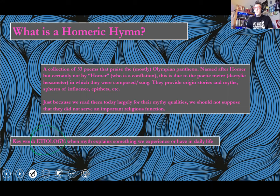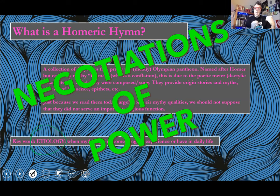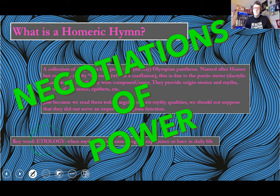In the Hymn to Demeter we saw etiology a couple of times — the creation of the cult of Demeter, and the idea of why we have winter, spring, fall, and summer. Most importantly, however, Homeric hymns are about negotiations of power. In the Theogony, we watch the generation of Ouranos give way to Kronos, give way to Zeus. Now we get to watch the Olympian gods negotiate for their own power, their own spheres of influence. In Demeter we saw a form of blackmail, but the Hymn to Hermes looks a lot more like a courtroom drama.